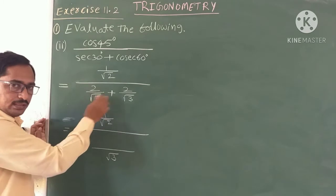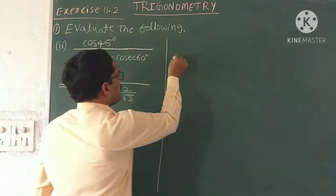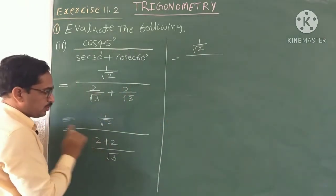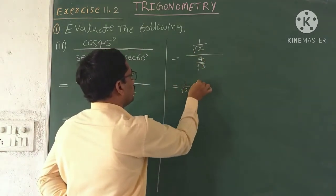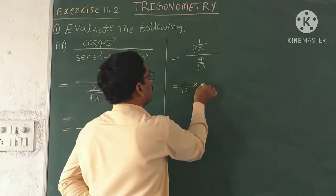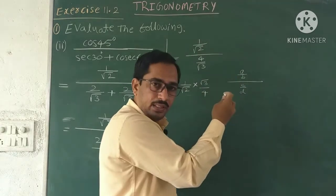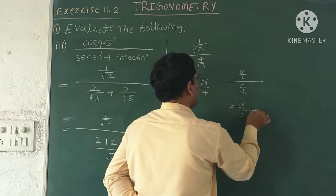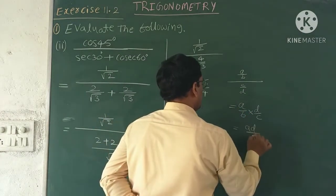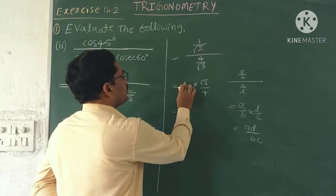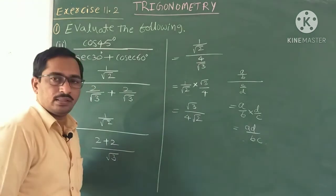Add the numerators since denominators are the same: 2 plus 2 equals 4, giving 4 by root 3. So we have 1 by root 2 divided by 4 by root 3. Using the formula A/B ÷ C/D = A/B × D/C, we get 1 by root 2 multiplied by root 3 by 4. Numerator: 1 into root 3 = root 3. Denominator: root 2 into 4 = 4 root 2. So the answer is root 3 by 4 root 2.